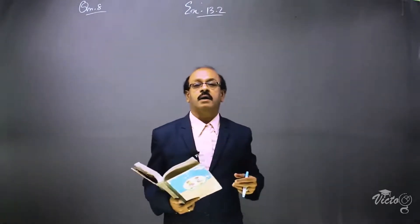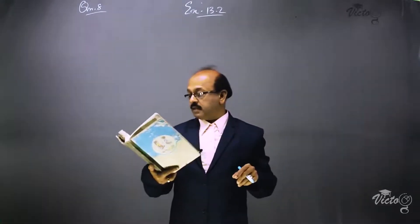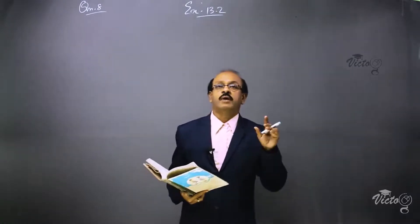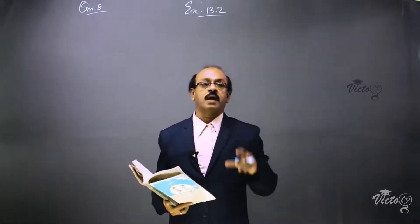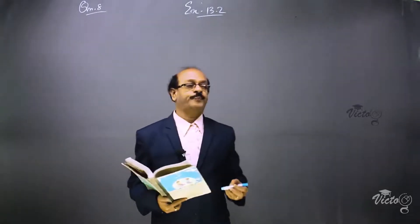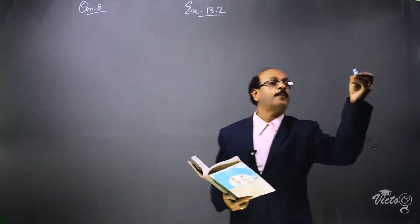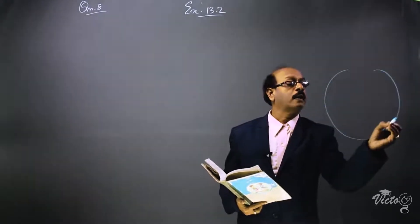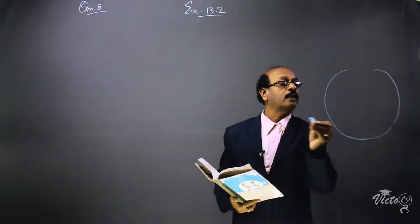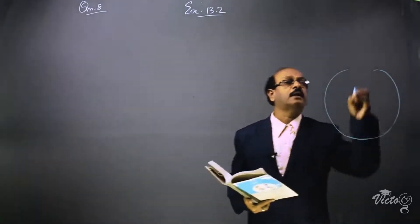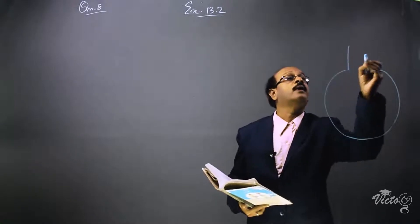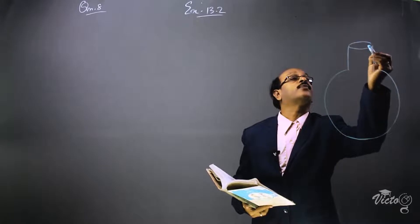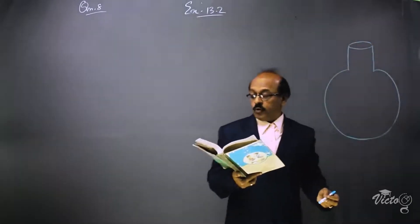The child got the answer as 345 centimeter cube, and we want to check whether that answer is correct or not. The shape of the vessel is a spherical part with a cylindrical neck — this is the shape of the vessel.